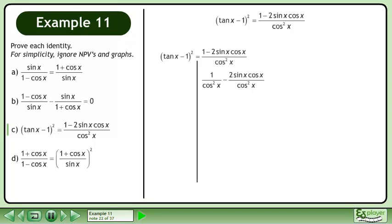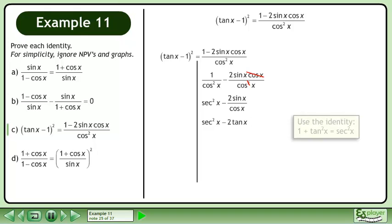Split the fraction. Cancel. Sinx over cosx becomes tanx. Use the identity 1 plus tan²x equals sec²x. Replace sec²x with 1 plus tan²x.